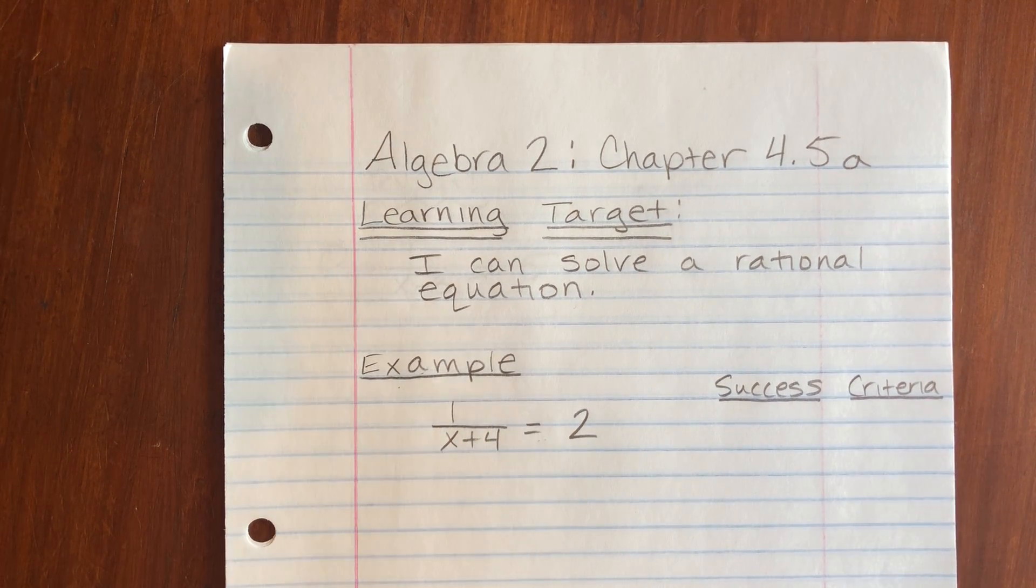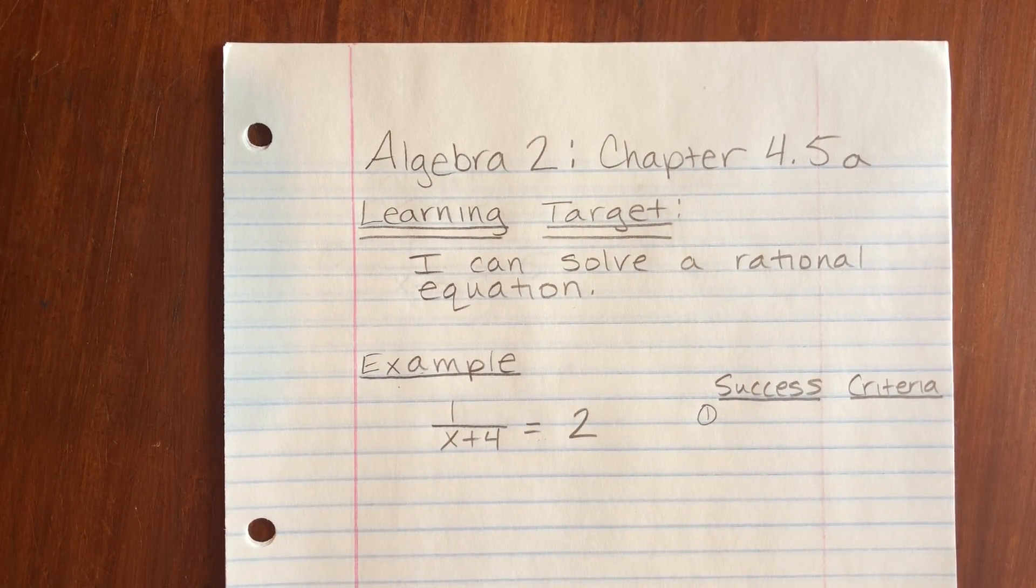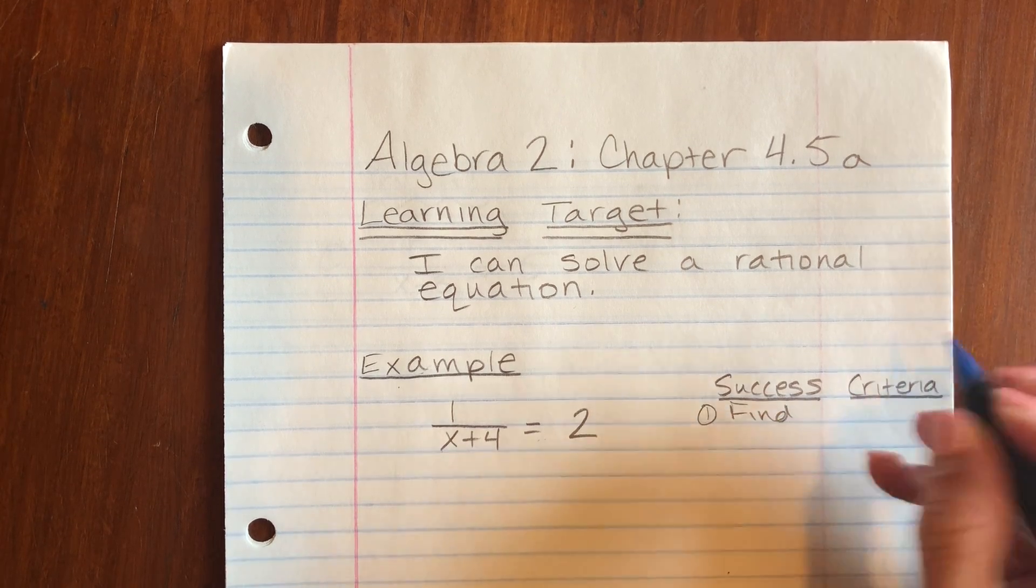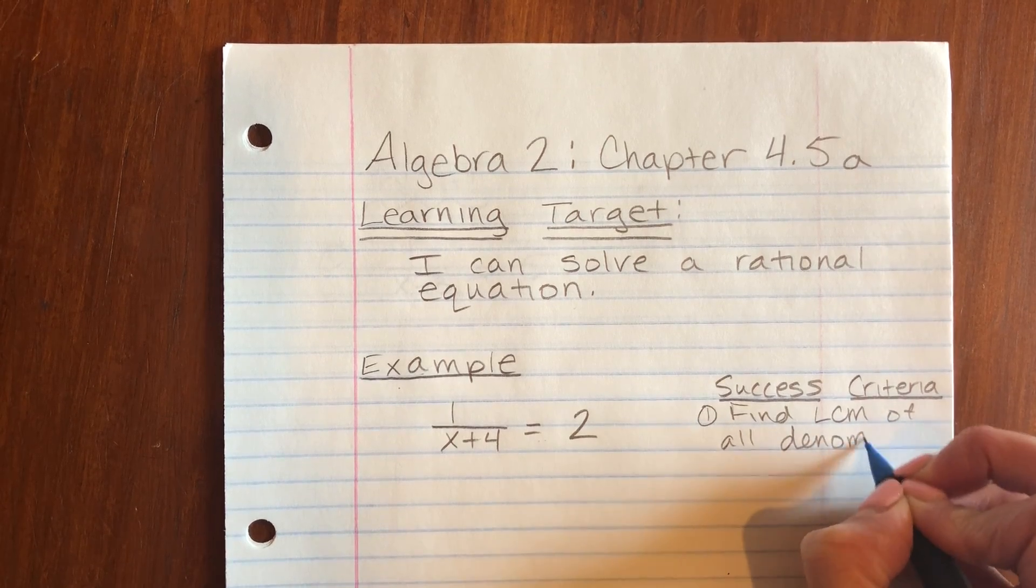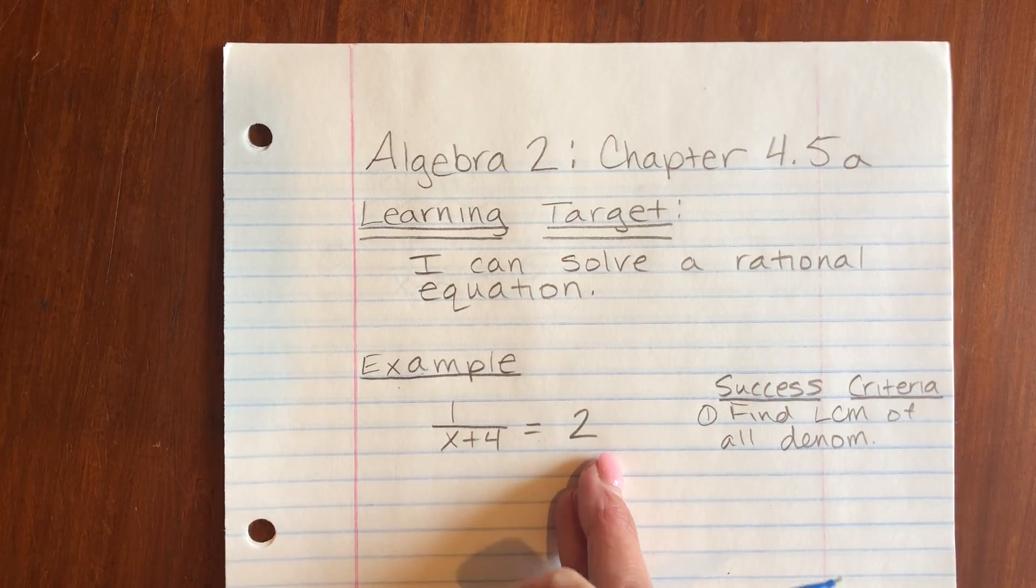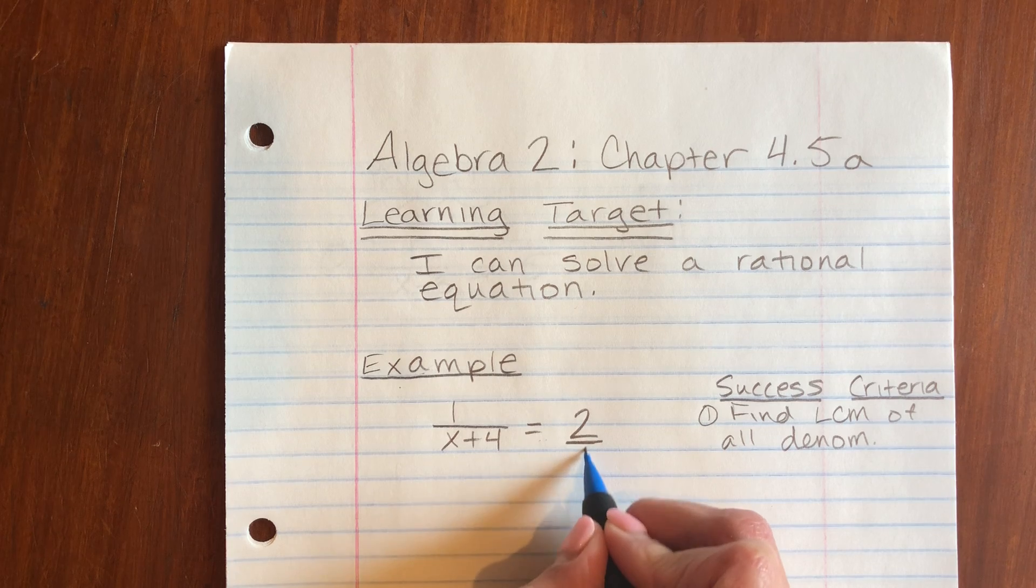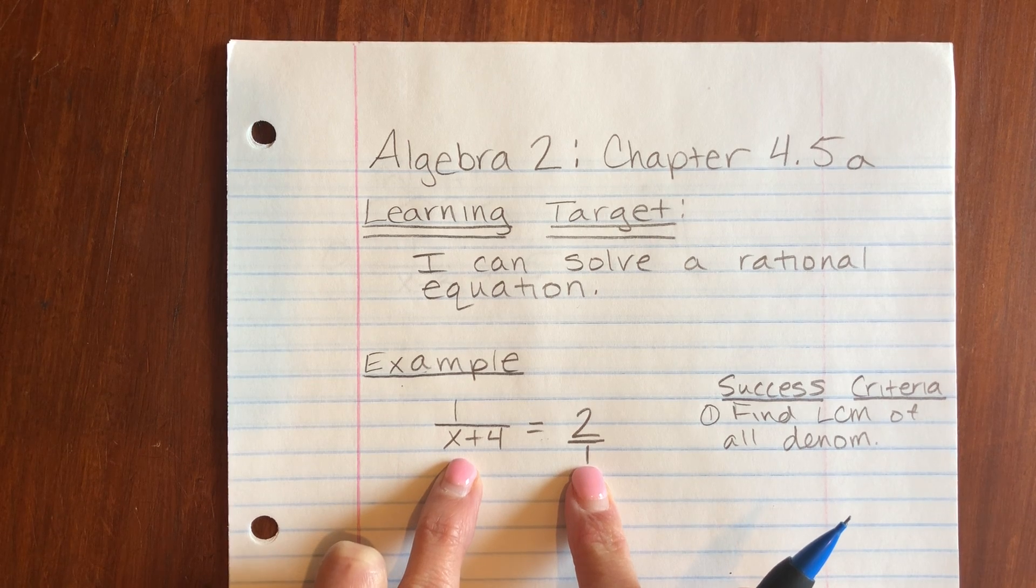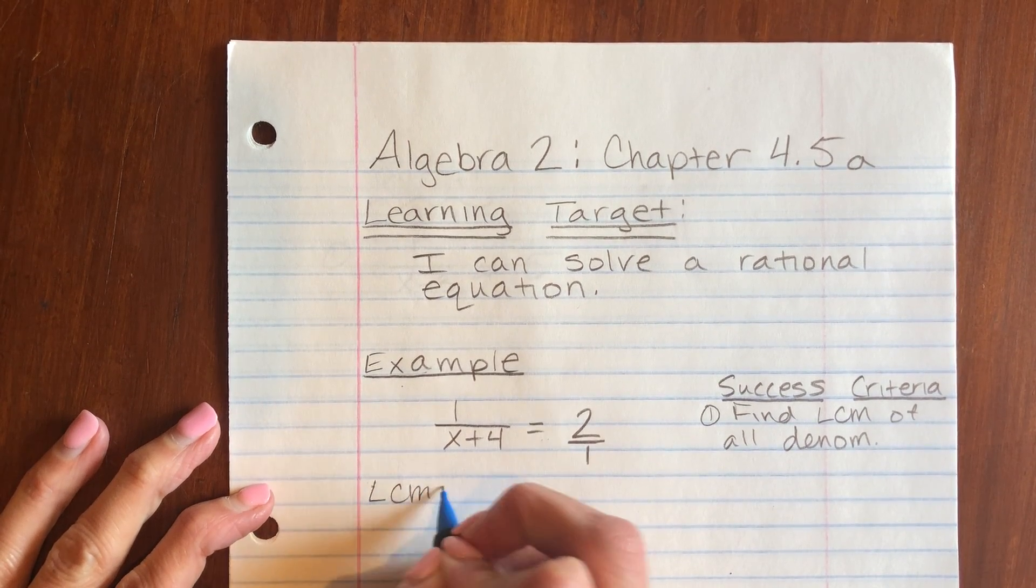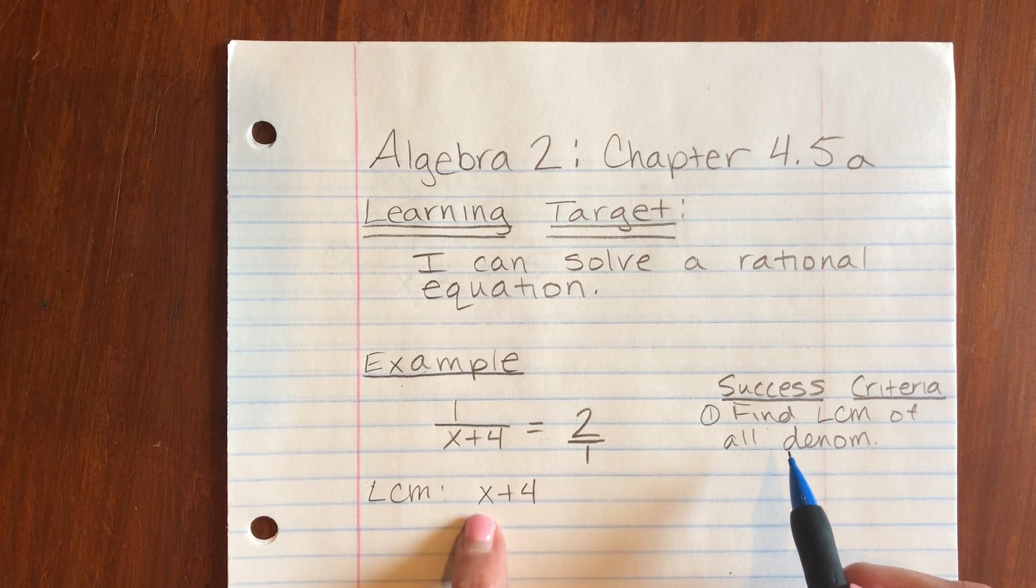So here's our first example. First thing you want to do is find the LCM of all the denominators on both sides of the equation. So this 2 right here, the denominator would be 1. So I'm looking at x plus 4 and 1. The LCM of x plus 4 and 1 would simply be x plus 4. That's step 1: find the LCM of all the denominators.